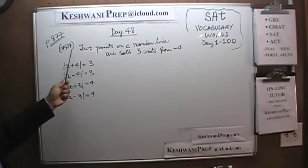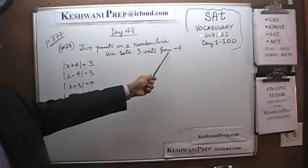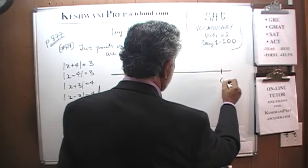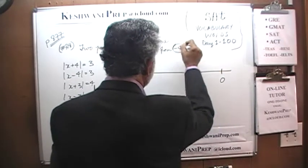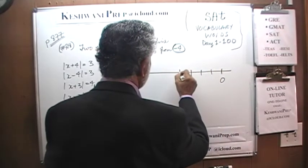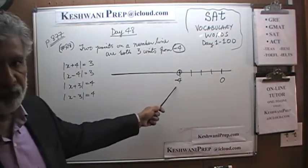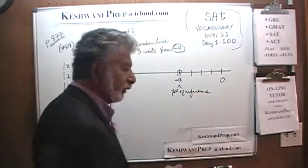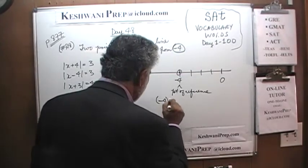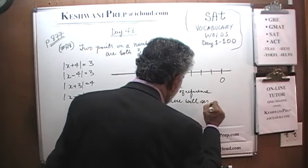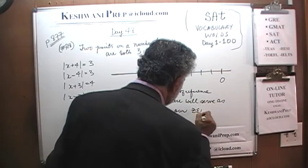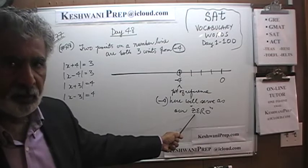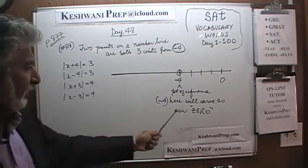Number 28 says we have two points on a number line that are both three units from negative 4. Let's draw a number line first. Here is our number line. Let's put zero somewhere here, and negative 4 is our point of reference. Negative 4 here will serve as our zero. When we substitute the value of x in any of these expressions, it has to give us zero.